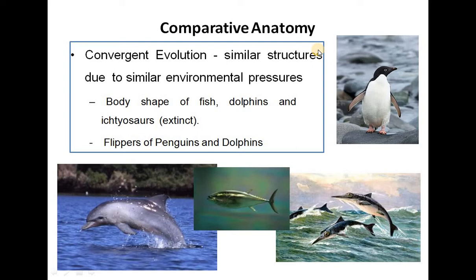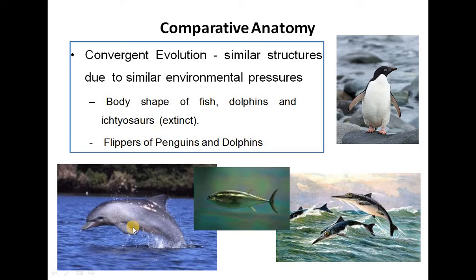Comparative anatomy is also important evidence in organic evolution, giving us convergent evolution — similar structures arising due to similar environmental pressure. The body shape of fish, dolphin and ichthyosaur (which is extinct) are all similar because all of them live in water. Similarly, the flippers of penguin and dolphin are both aquatic organisms using flippers for locomotion in water, and they are structurally similar.